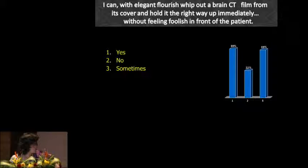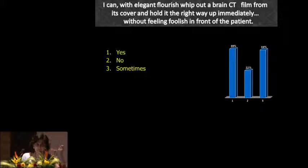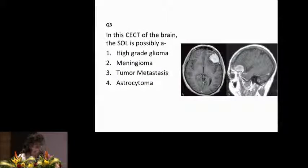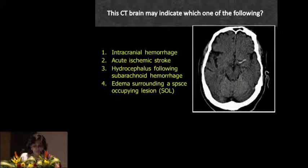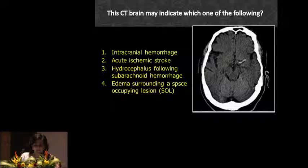Thirty-nine percent can, and I am in group three. Many times I'm pretty embarrassed whether the name is on correctly or not — so I'm there with 39 percent of us. The next question: this CT scan may indicate which one of the following — is it an intracranial hemorrhage, an acute ischemic stroke, a hydrocephalus following subarachnoid hemorrhage, or an edema surrounding a space-occupying lesion?